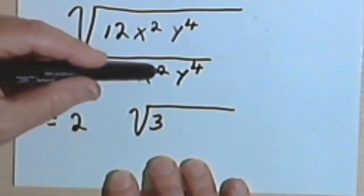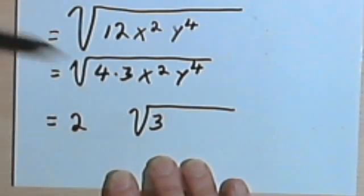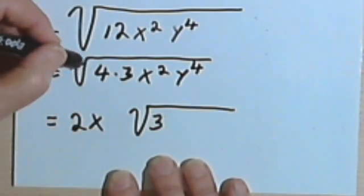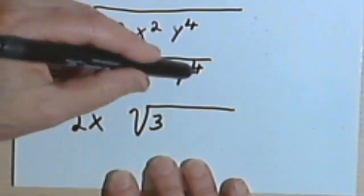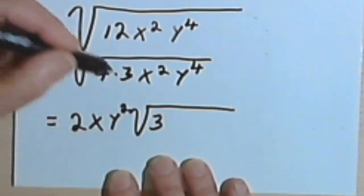The square root of x squared... Remember, I have a 2 here as my index, so 2 goes into 2 one time, no remainder, so I'll just have an x. For the y to the 4th, 2 goes into 4 two times, so I'll have y squared with no remainder.